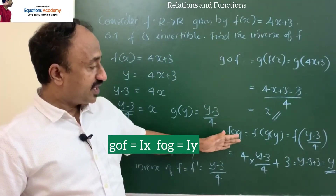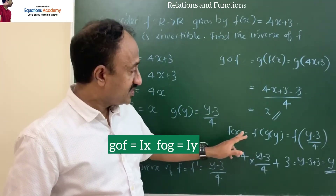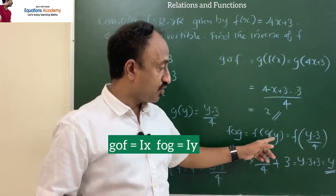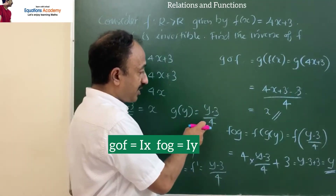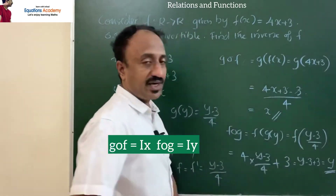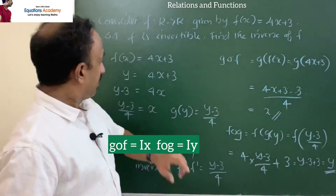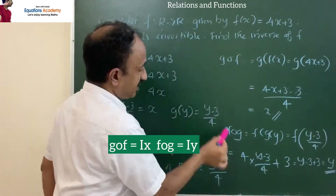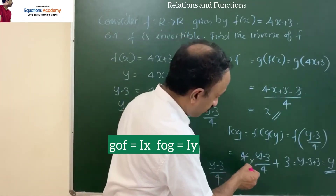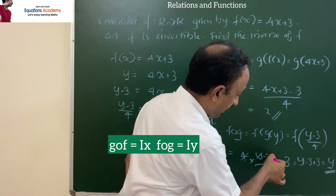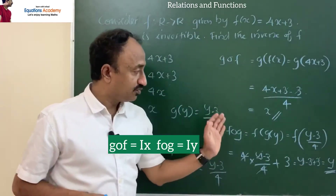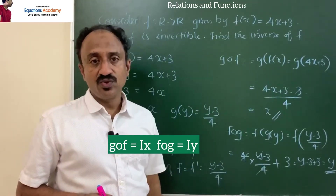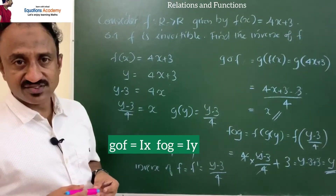Now for f∘g: f(g(y)) = f((y − 3)/4). Since f(x) = 4x + 3, substituting x = (y − 3)/4 gives 4·(y − 3)/4 + 3 = (y − 3) + 3 = y. So f∘g = y, which is I_Y. We proved g∘f = x and f∘g = y, so the given function is invertible.